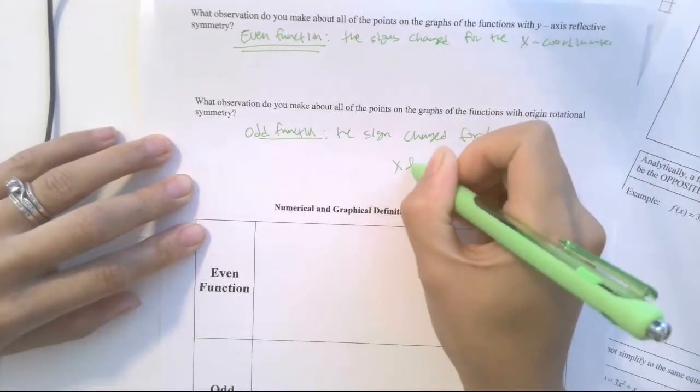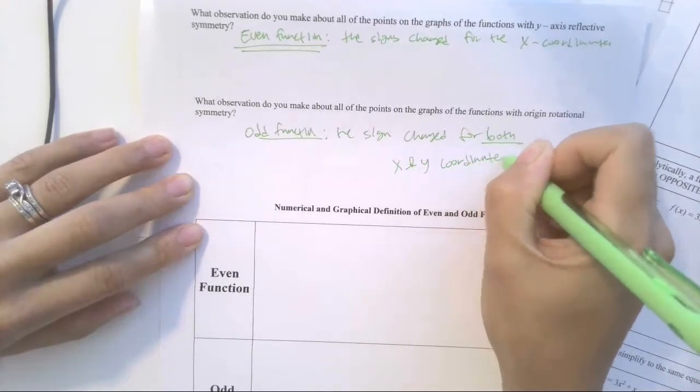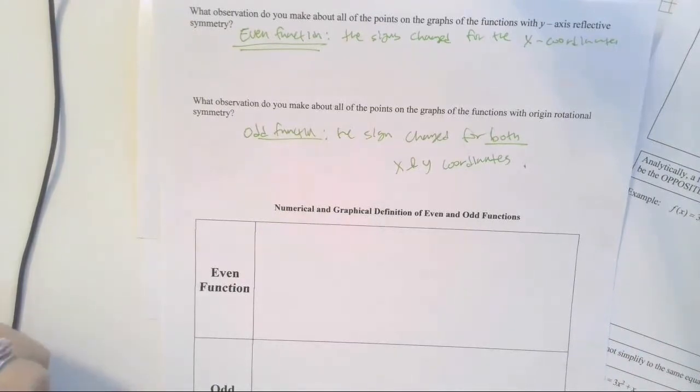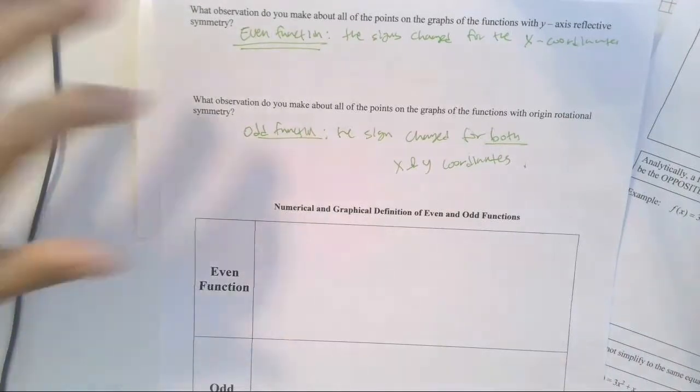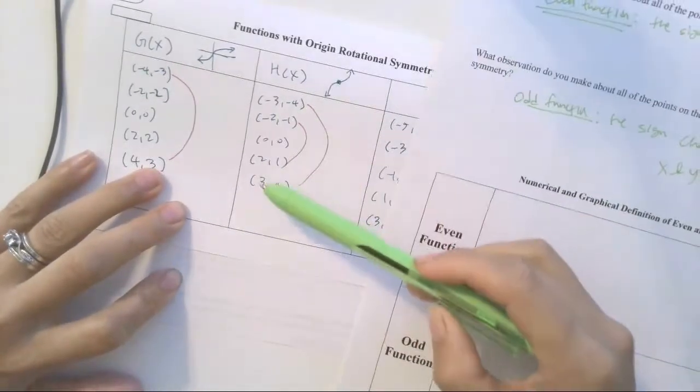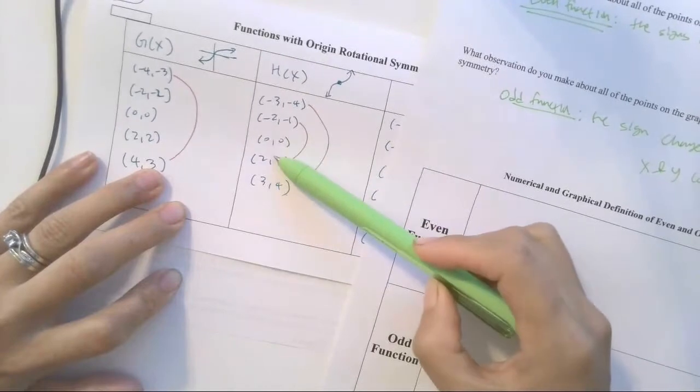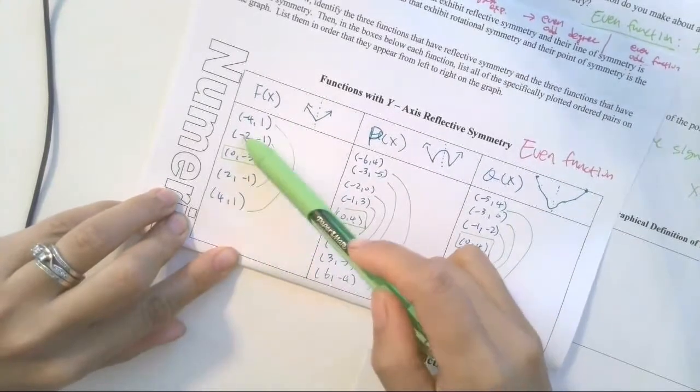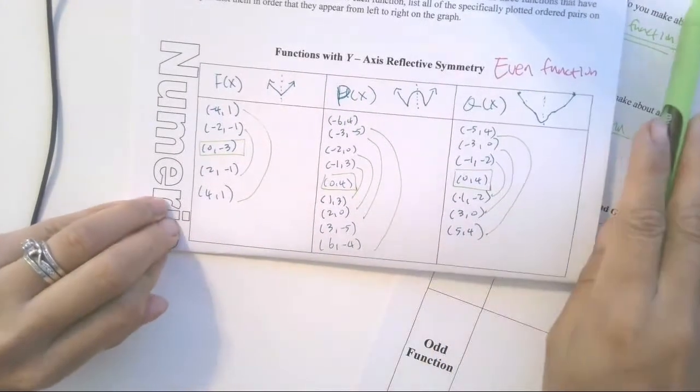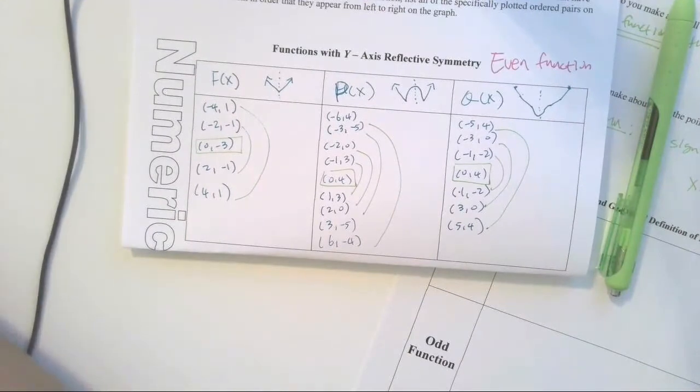So on your delta math next problem, I think you're asked to plug in the values into the x to complete the table first and then determine whether it's even or not. So it has to happen for all the points, right? So if your x changes the sign, y changes the sign for all the points, then it's odd function. If your x changes the sign but y stays the same for all the points, then it's even function. If it's neither of them, then it's neither. So please go ahead and do the next problem on your delta math and come back.